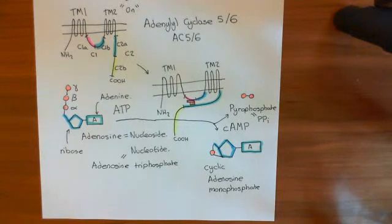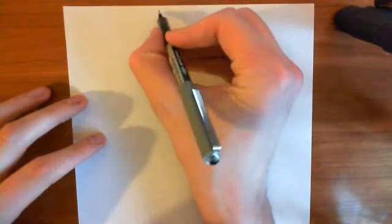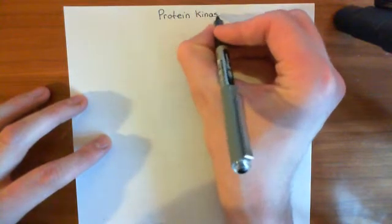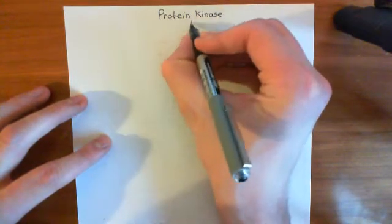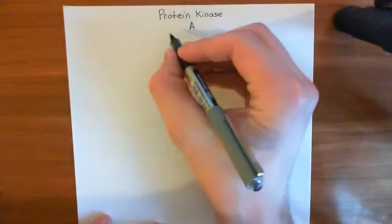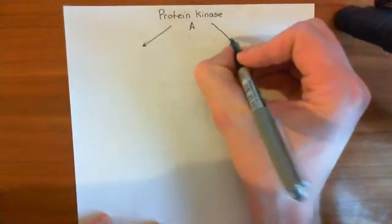Protein kinase A is a more complicated topic than you would think, because there are two types of protein kinase A. In the cardiac muscle cells activated by noradrenaline, we're going to get activation of both of these types, and they're going to do slightly different things. So let me discuss the two different types of protein kinase A briefly.